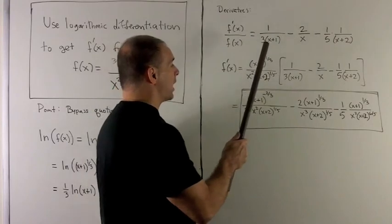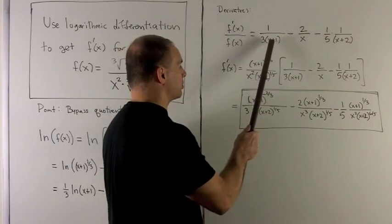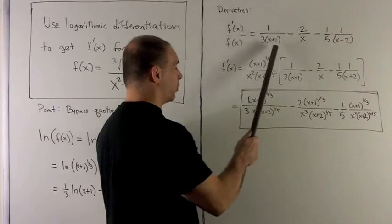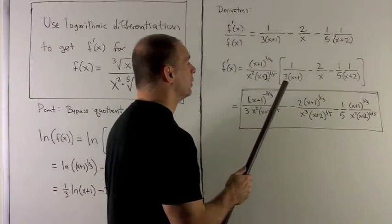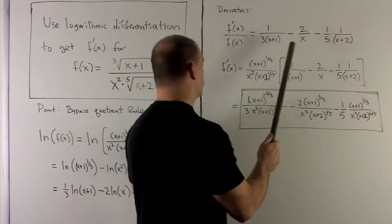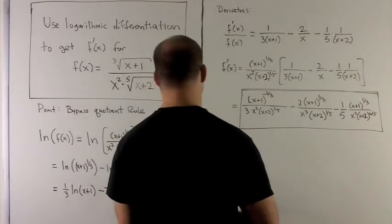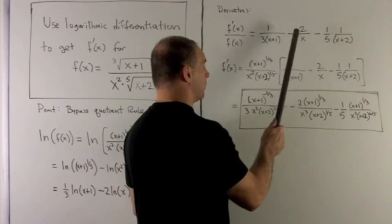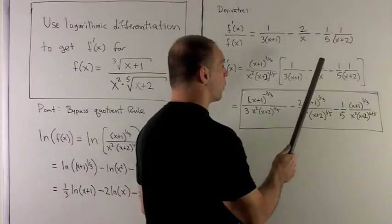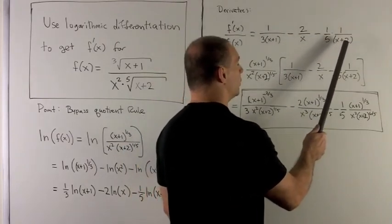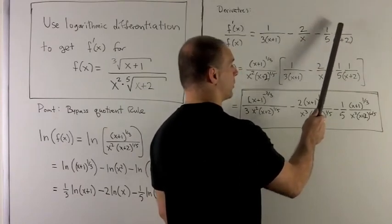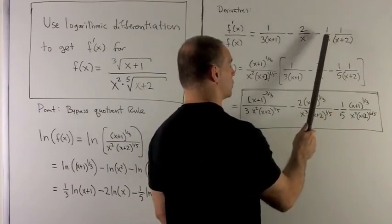For natural log of x plus 1, I put x plus 1 in the bottom, its derivative is 1 which goes on top, carry the one-third around. For the x squared, that just turned into 2 natural log of x, that thing's derivative is just 1 over x, and we keep the minus 2. And then for x plus 2, we put that in the bottom, derivative of x plus 2 is just 1, so that goes on the top, and that picks up the minus one-fifth.